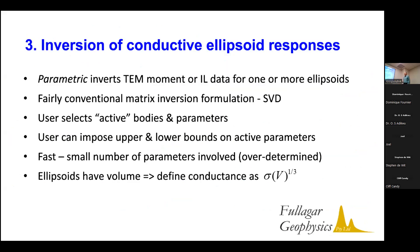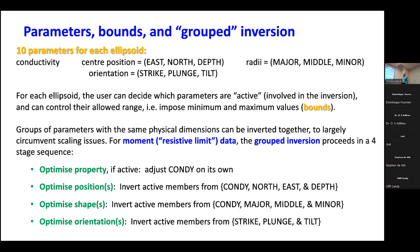In terms of inversion, I won't go into mathematical detail — it's pretty standard matrix inversion — set up to invert for one or several ellipsoids. The user has control over which bodies are actually changing, so you can keep some fixed if you wish, decide which parameters are going to be changed or kept fixed, and also impose bounds on the parameter ranges. A minor point: because ellipsoids have volume, when I talk of conductance I'm using conductivity times the one-third root of the volume — at least it has the same dimensions we're used to.